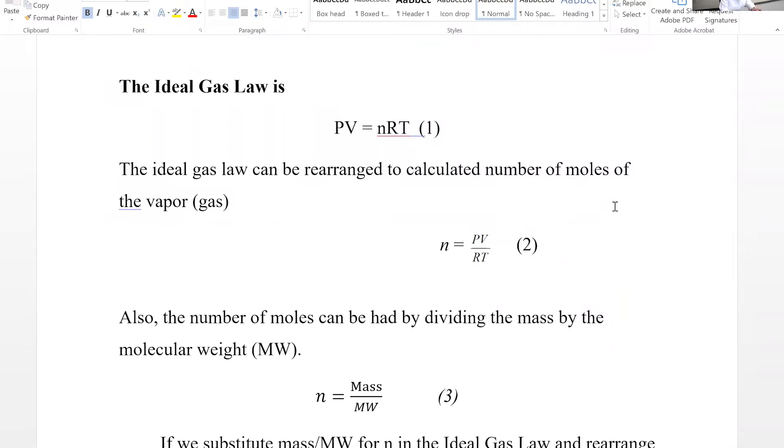What is ideal gas law? PV equals nRT. In this equation, P is the pressure and it must be in atm atmosphere. V is volume and it should be in liters. n is number of moles.